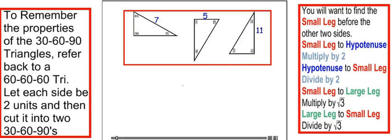Okay, here's three example problems for the 30-60-90 problems. The first one, we're given the hypotenuse, the 7.